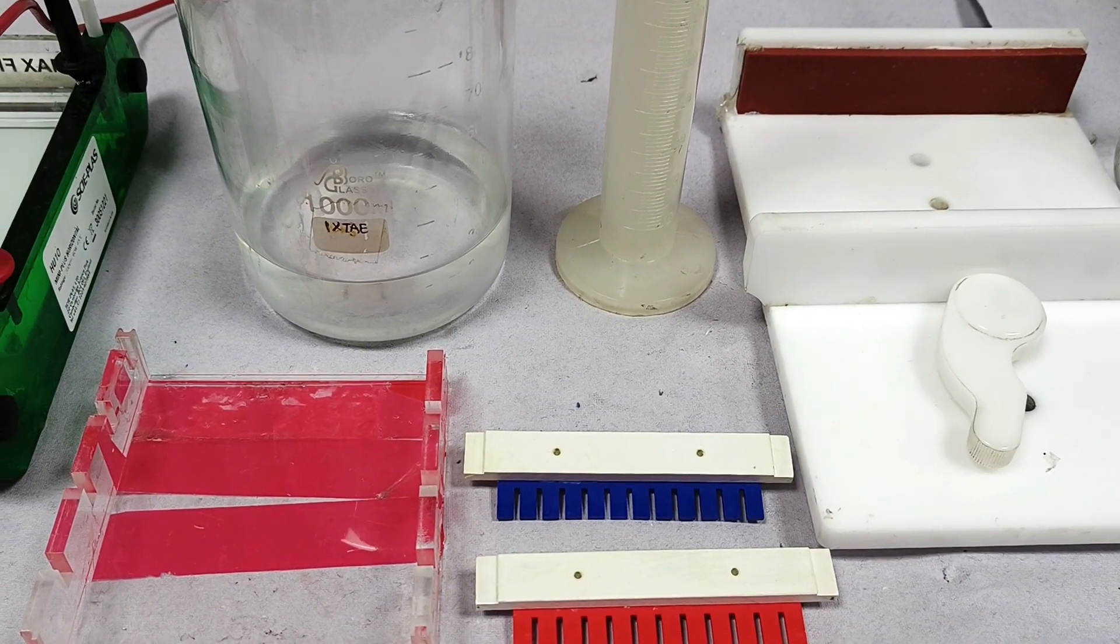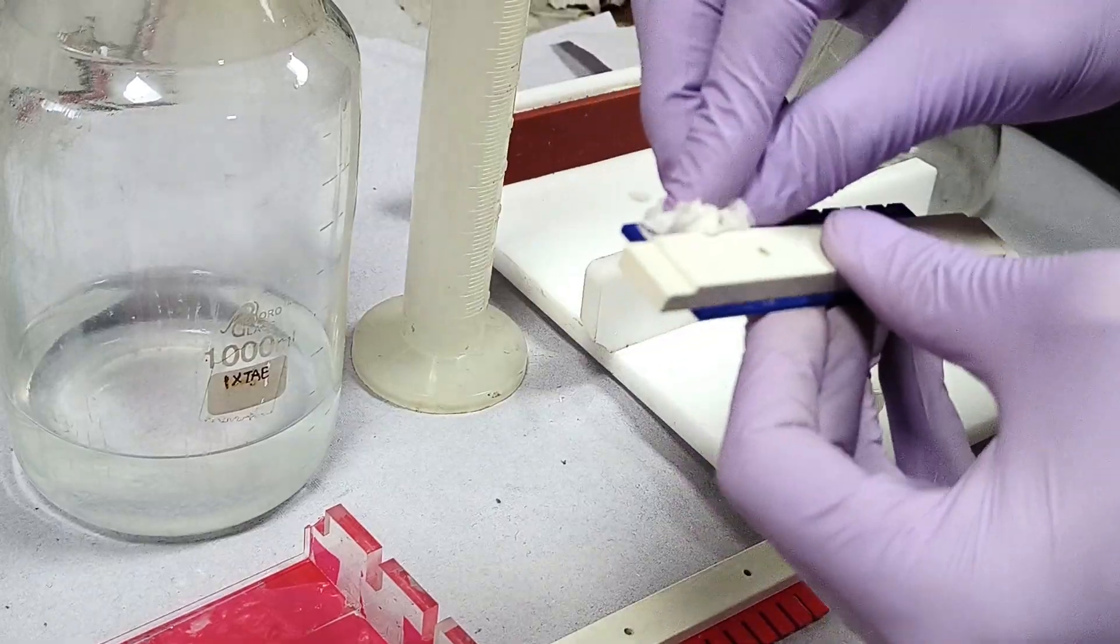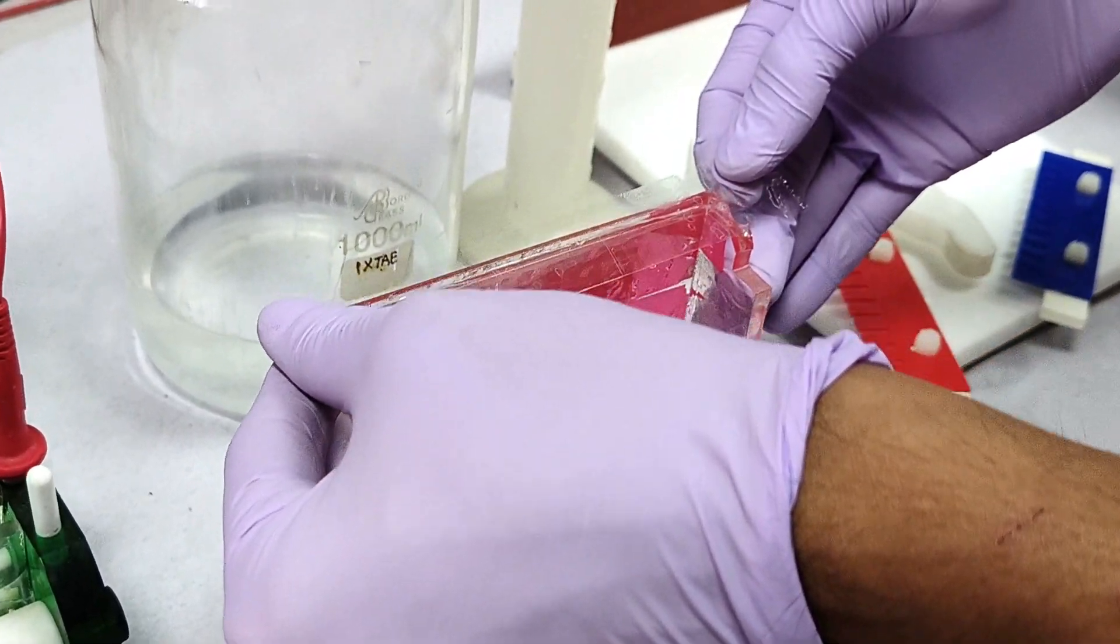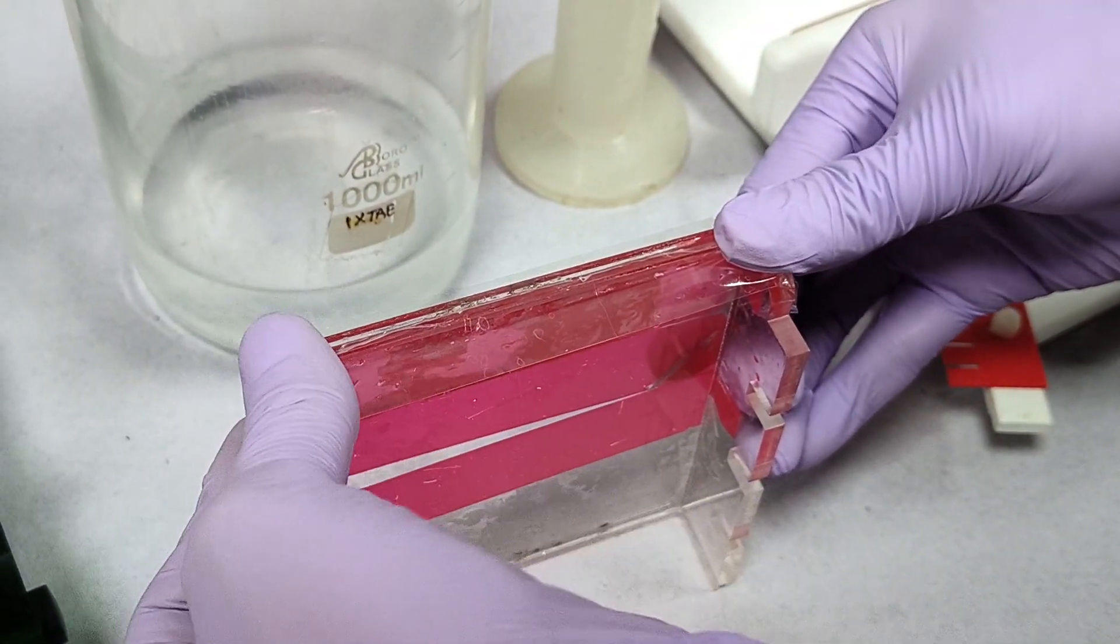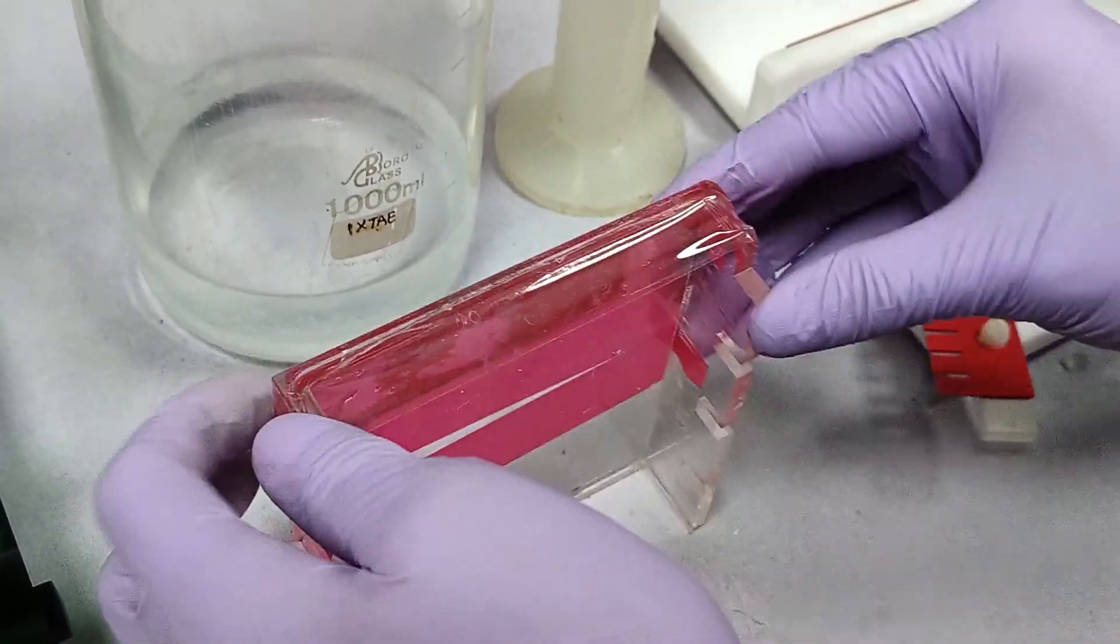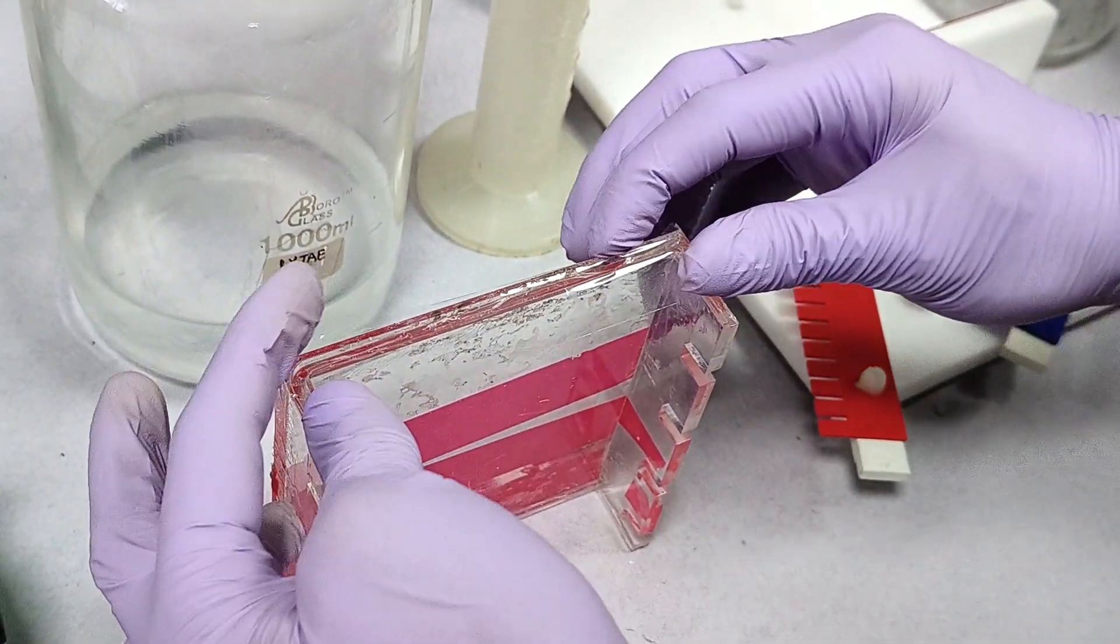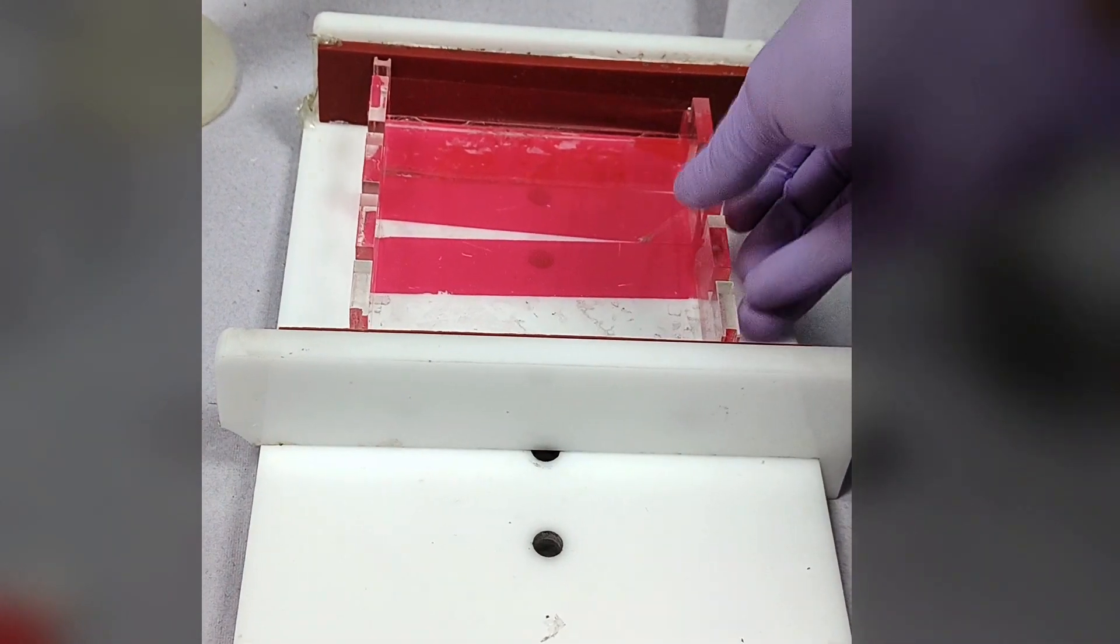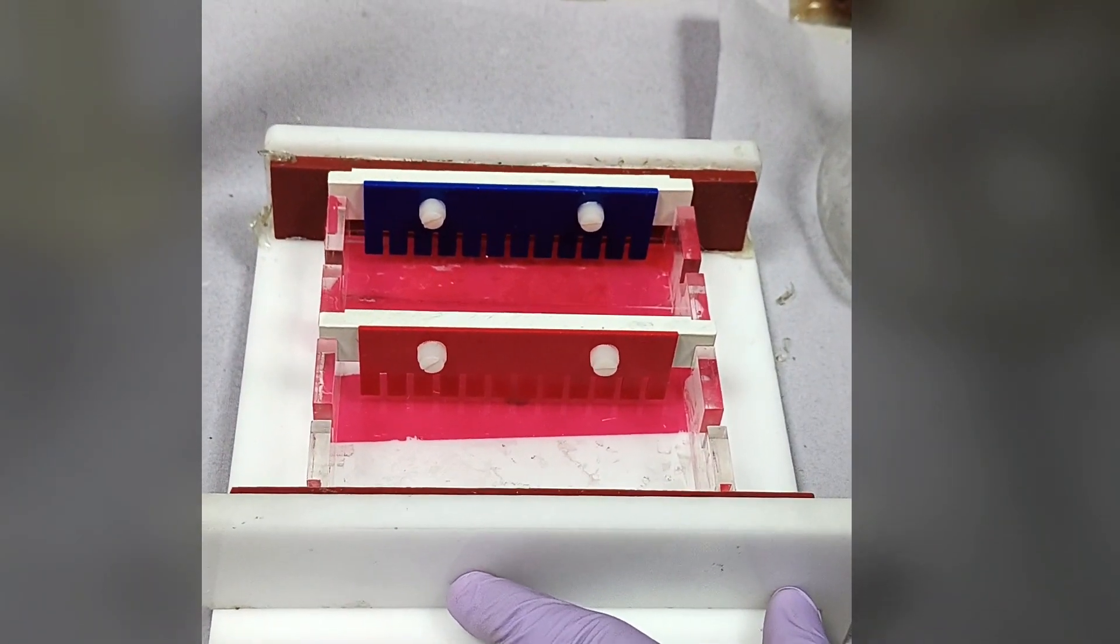This is the setup for casting a gel. First, properly clean the casting tray and combs with 70% ethanol. After cleaning them, sellotape is used to seal both the sides of the casting tray to avoid any leakage of the gel. Then the casting tray is placed on the caster, and the combs are properly kept in their respective slots. Depending on the number of samples to be analyzed, multiple combs can also be used.